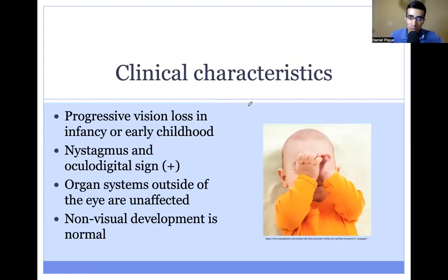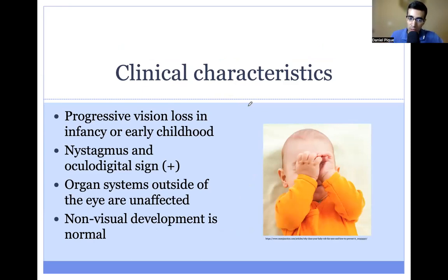The clinical characteristics of LCA, as it's abbreviated, include progressive vision loss in infancy and early childhood. Patients, particularly infants, will present with nystagmus — a beating of the eye movements. They'll also present with the oculodigital sign, which is when you see an infant who presses or rubs on their eye, and the reason they're doing this is to stimulate their visual pathways.